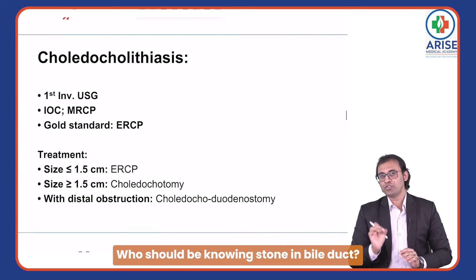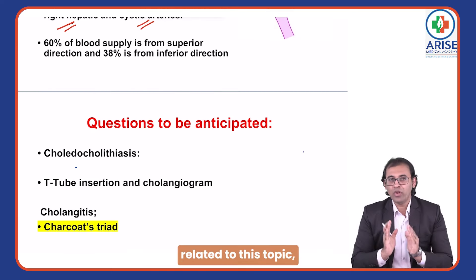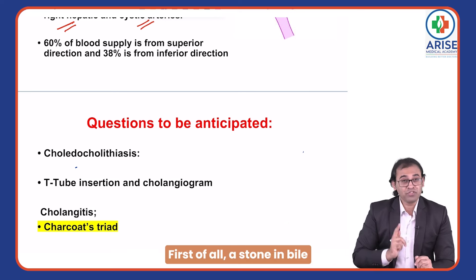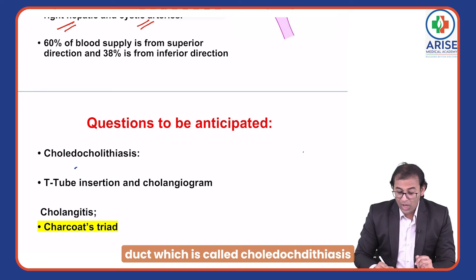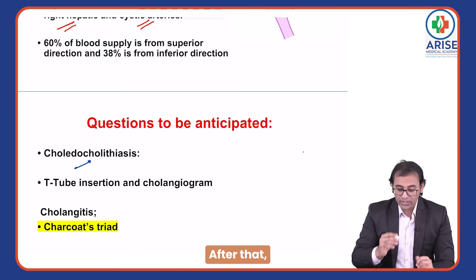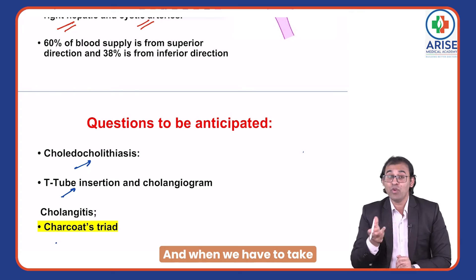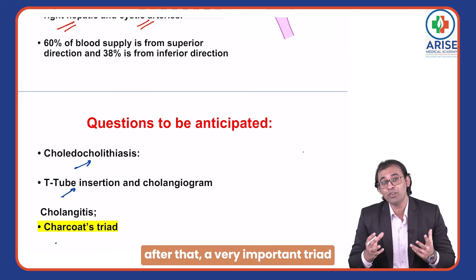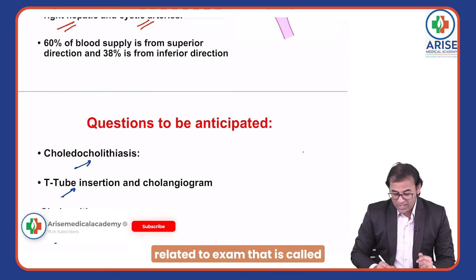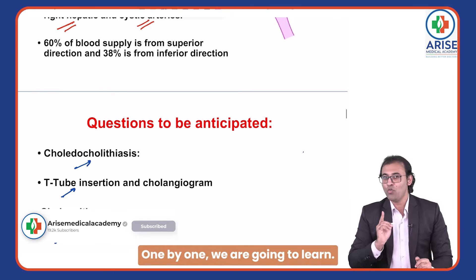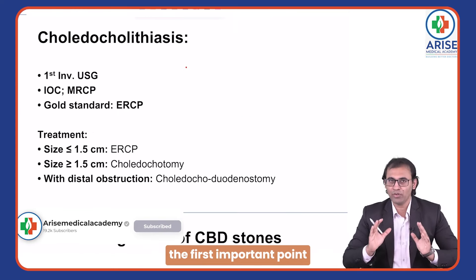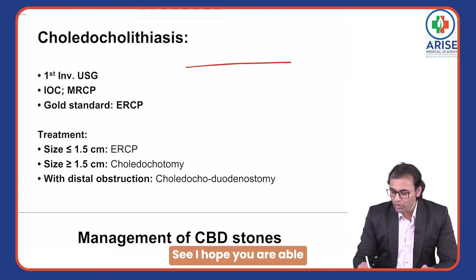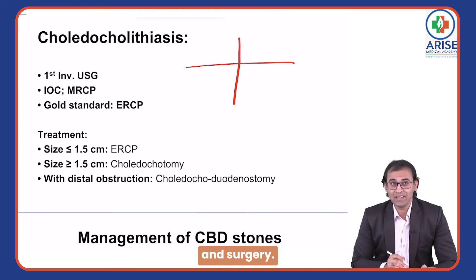The most anticipated exam questions relate to stones in the bile duct — choledocholithiasis — T-tube insertion, when to take a radiological image, and Charcot's triad. The first important point is related to CBD stones. I hope you are able to recall your knowledge of pathology and surgery.